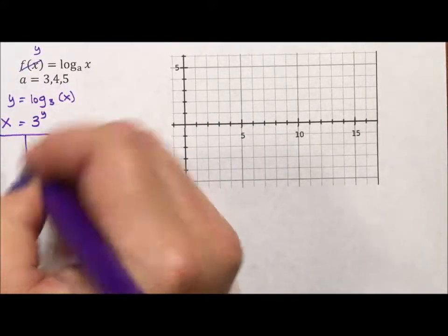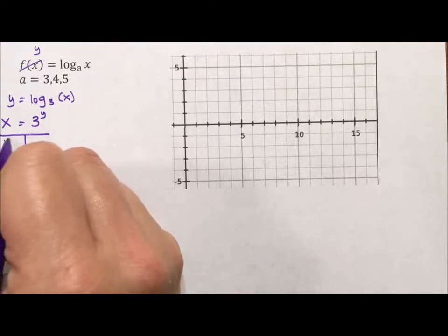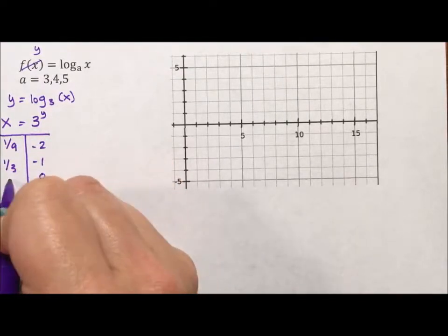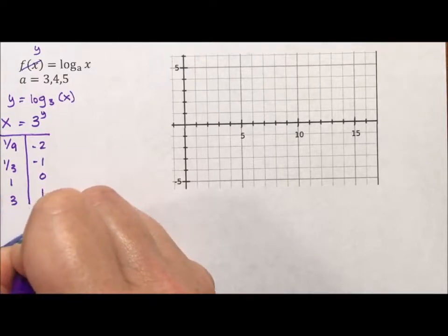Well, if I substitute in for my y values, negative 2 is 1 ninth, negative 1 is 1 third, 0 is 1, 1 is 3, and 2 is 9.